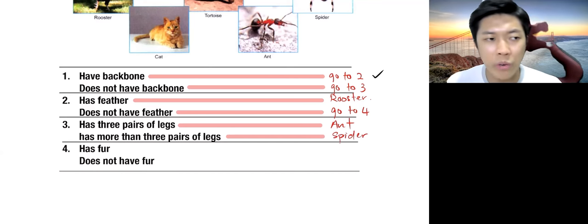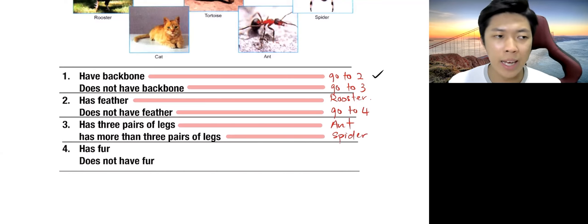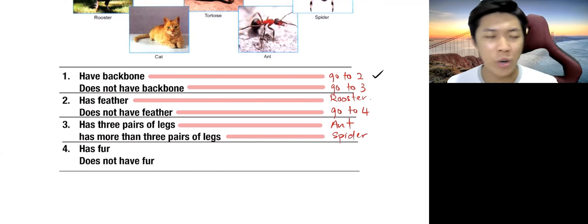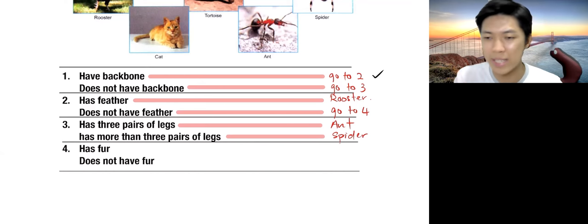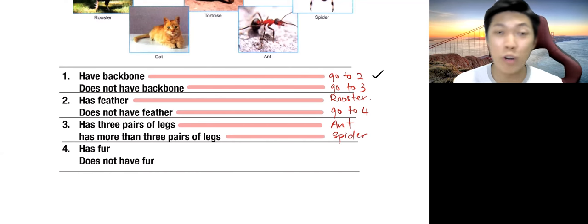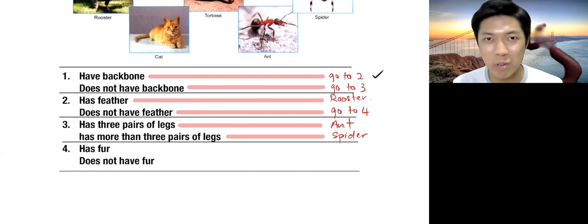So why don't we write has eight legs or four pairs of legs? Well, that's not like a yes and no. We want like exactly yes and no, has three pairs or more than three pairs. Of course, we're not going to write not having three pairs or three pairs. No, three pairs, not. We don't, I mean, they have legs definitely.